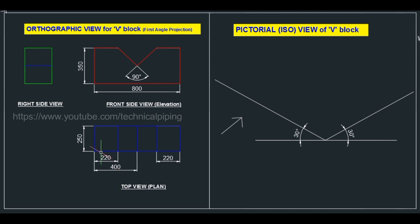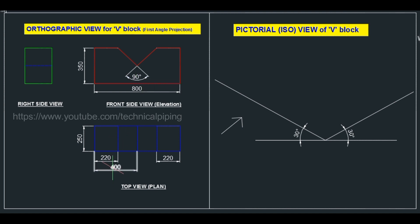From the top view, the V-cutting starts at 220 mm, and the center of the V-block is at 400 mm. Based on these dimensions we can draw the front side view first.